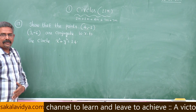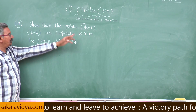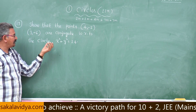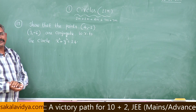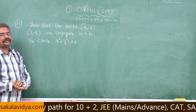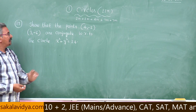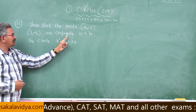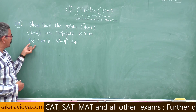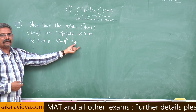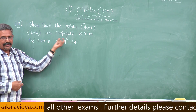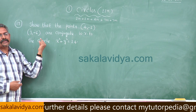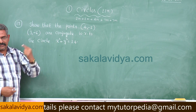Now we have to prove that (4, -2) and (3, -6) are conjugate with respect to the given circle. Do you know what is the condition? If x₁, y₁ and x₂, y₂ are conjugate with respect to the circle x² + y² = r², then s₁₂ = 0. That means x₁x₂ + y₁y₂ - r² = 0.